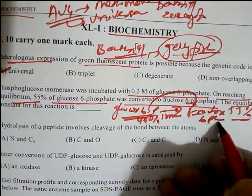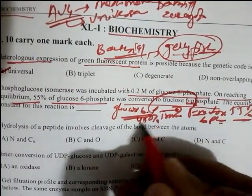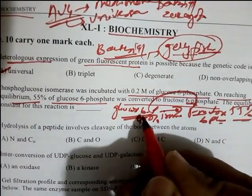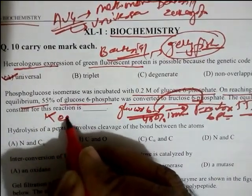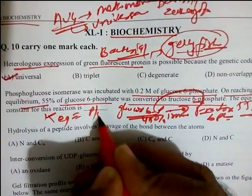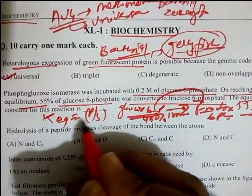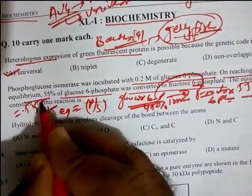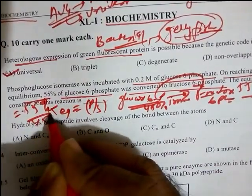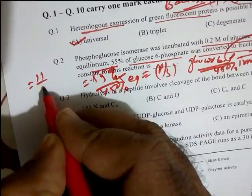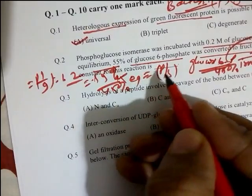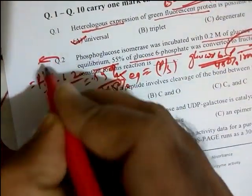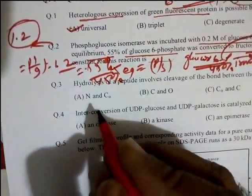Using the formula: K_eq = [product] / [substrate] = 55 / 45 = 1.2. So the answer to question two is 1.2.